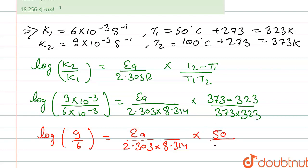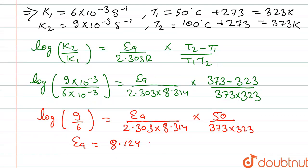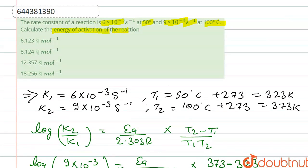After solving, we get the value of Ea which is 8.124 kilojoules per mole. Coming to our options, this matches with option B.